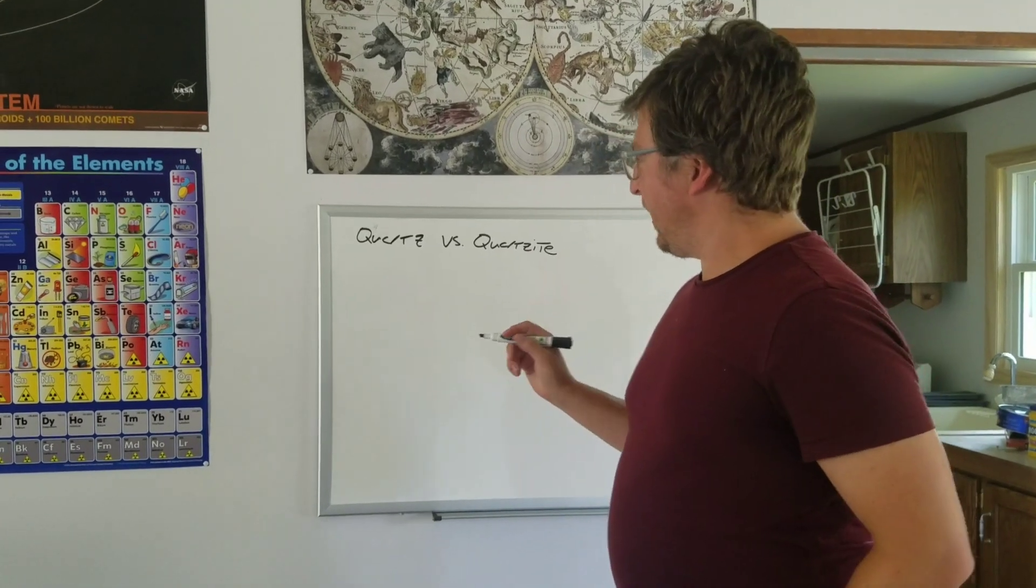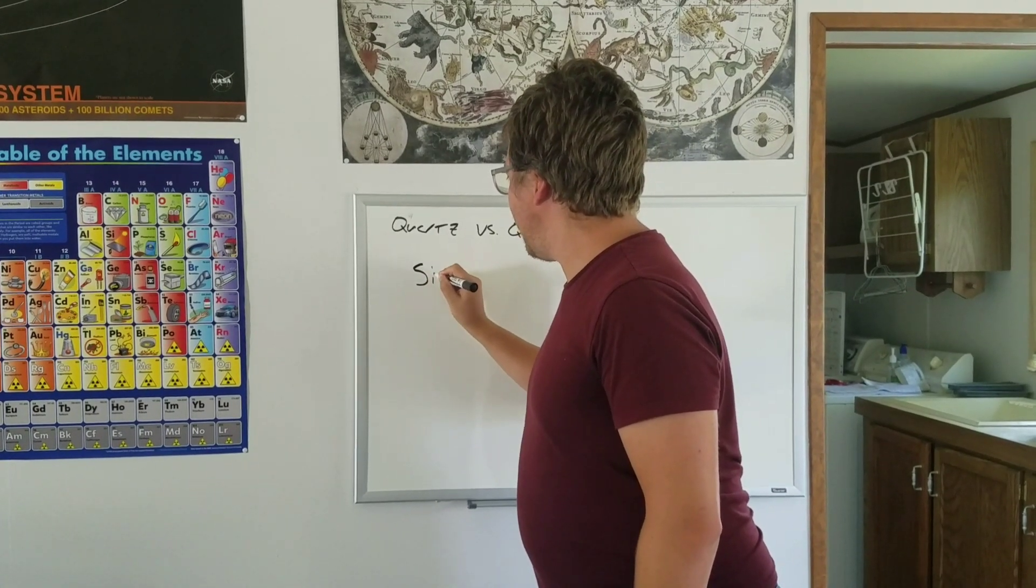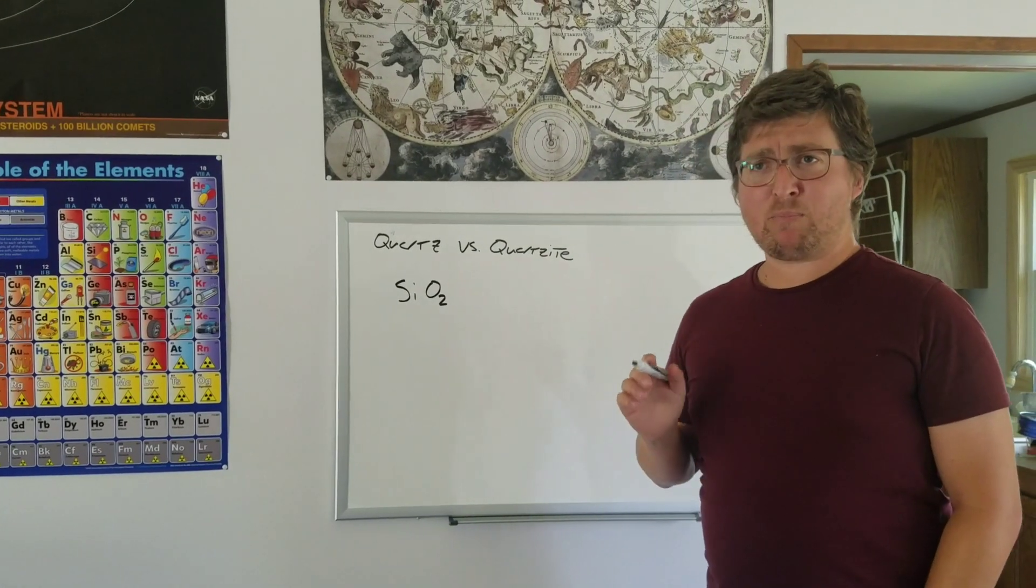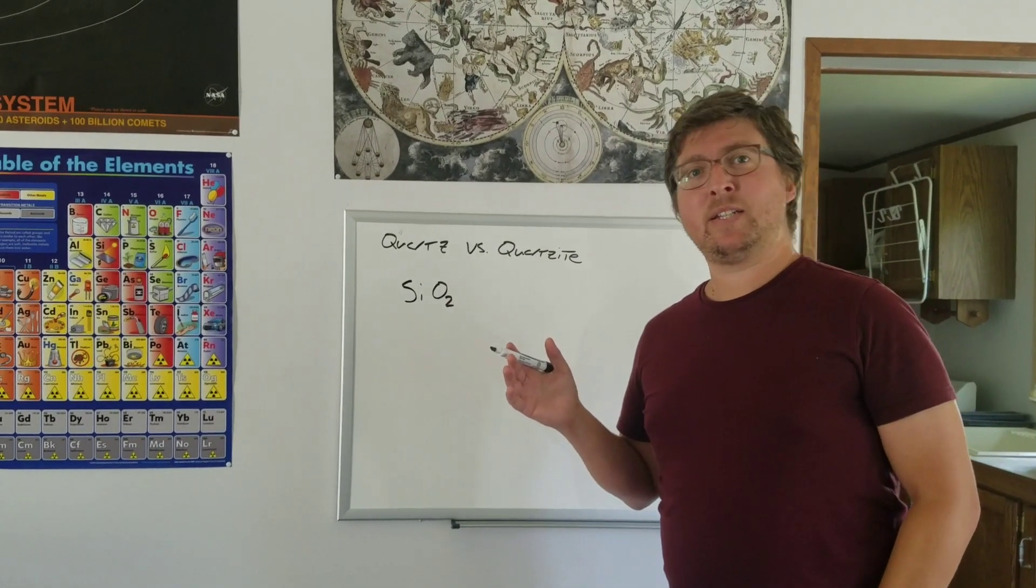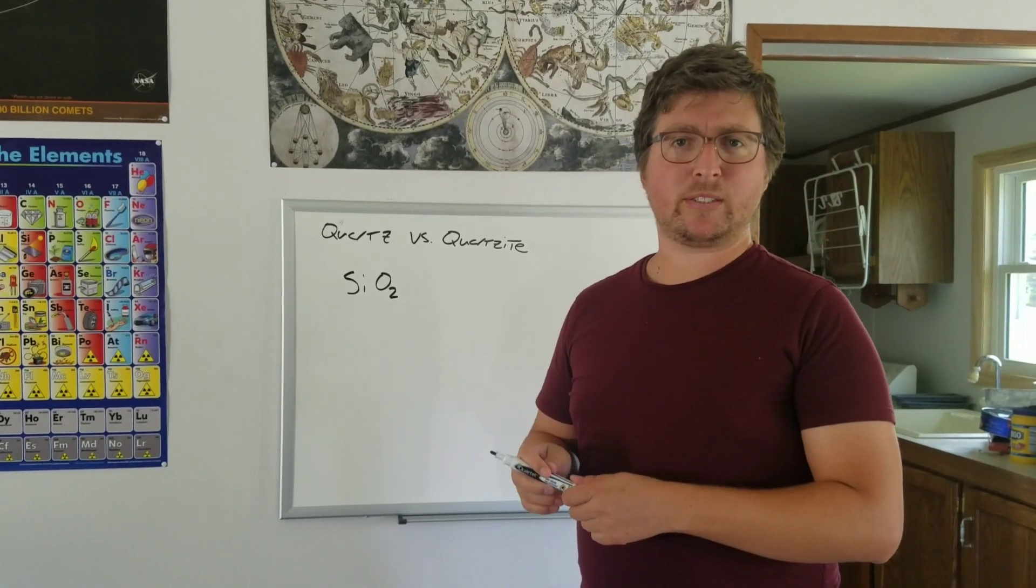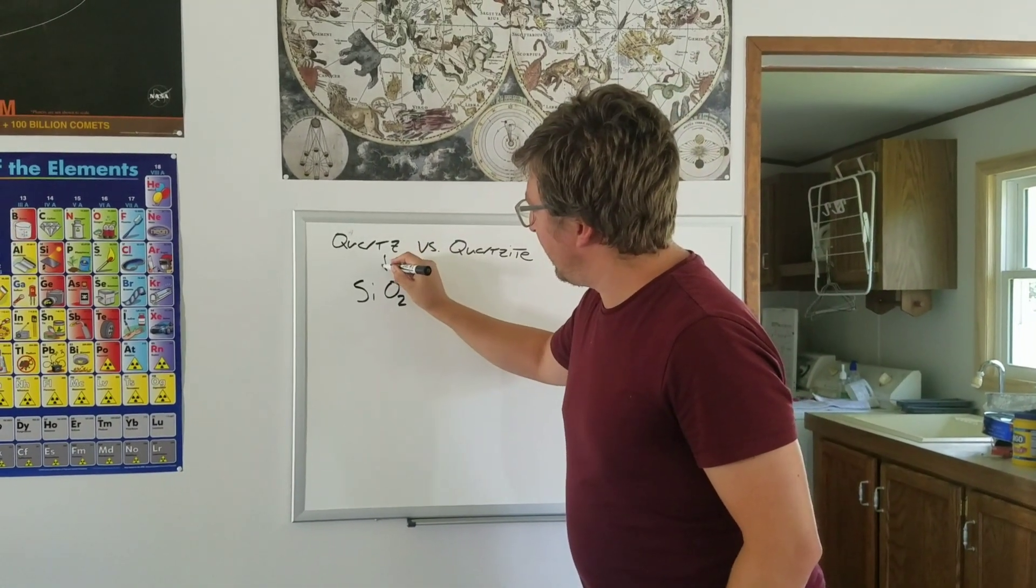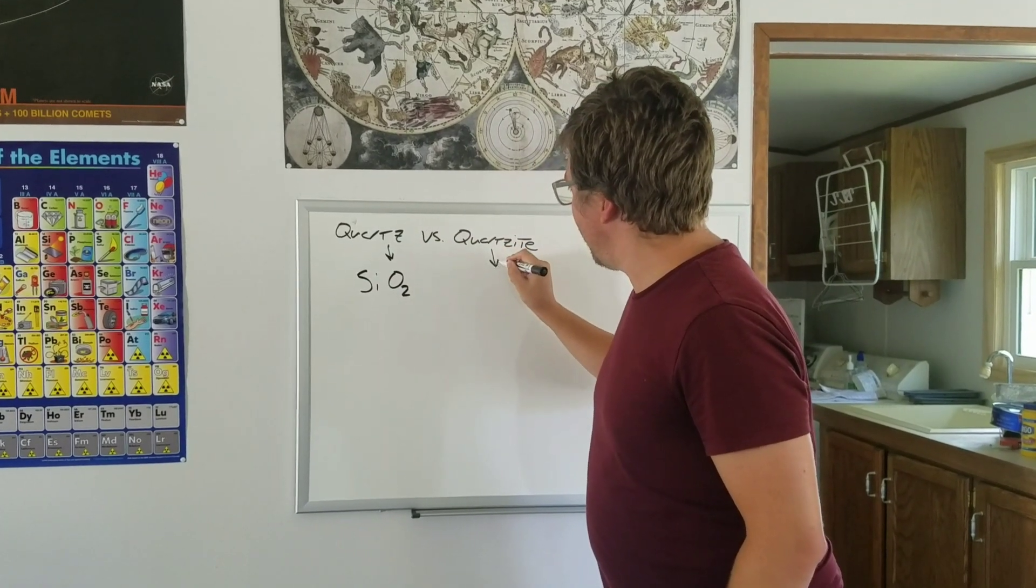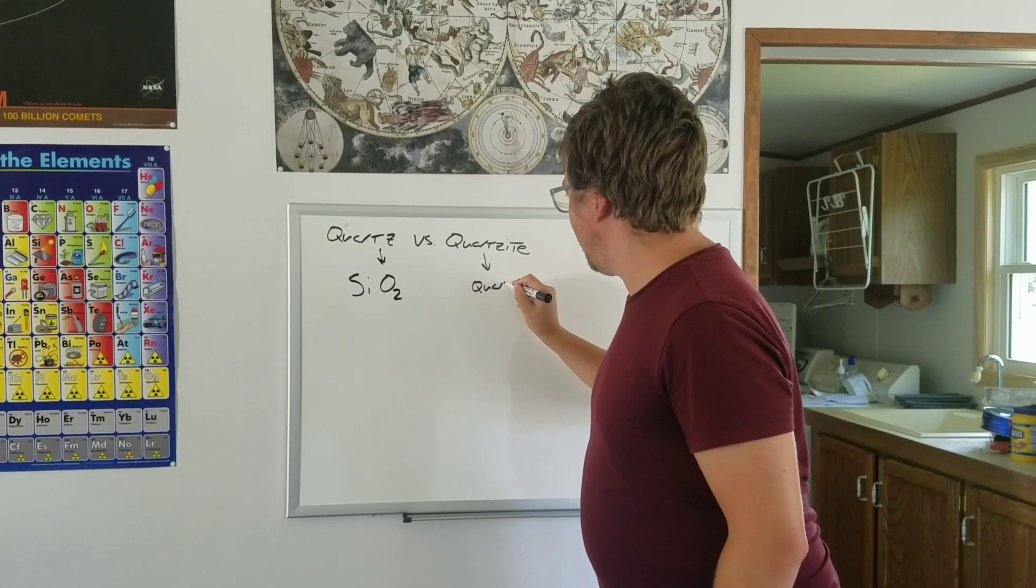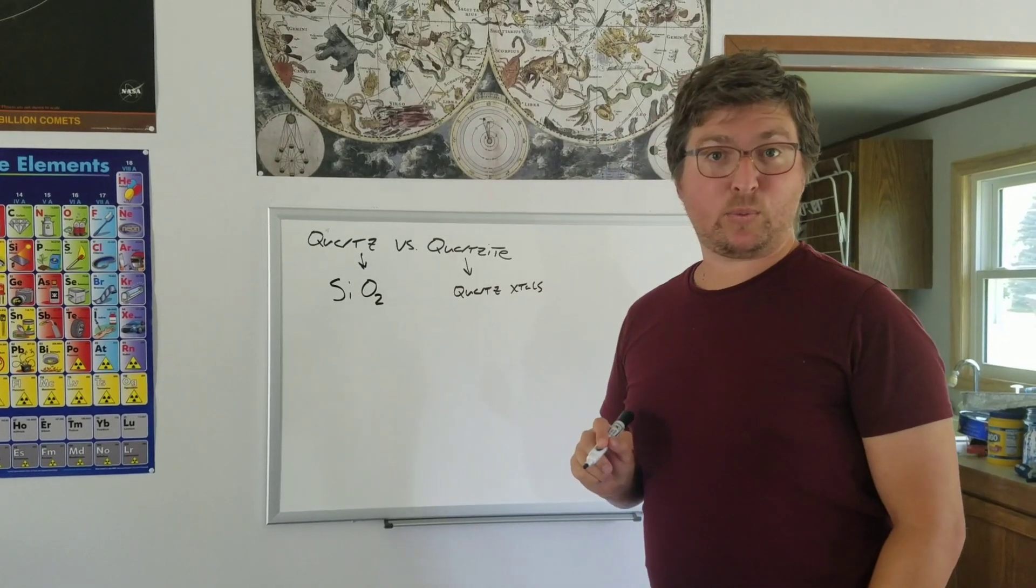So quartz has a very simple chemical formula, SiO2, and it's really kind of the basis for most of the geology we see on the planet. In fact, it is probably the most common substance in the Earth's crust. Quartzite is made out of lots and lots of quartz crystals. And that's really the difference.